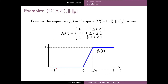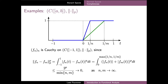For this purpose we define a sequence of functions fn depicted in the figure. Each fn is identically zero from minus one to zero, then rises steeply from zero to one on the interval from zero to one over n, and then is constant and equal to one until t equals one. As the index n increases, the interval of the rise gets shorter and shorter, and correspondingly the slope gets steeper and steeper.